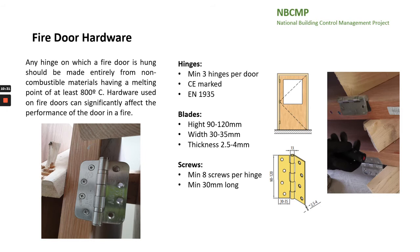Any hinge on which a fire door is hung should be made entirely from non-combustible materials, having a melting point of at least 800 degrees. Hardware used on fire doors can significantly affect the performance of the door in a fire. There must be at least 3 hinges per door. The hinges must be CE marked and EN 1935 compliant. The blades must be from 90 to 120 mm in height, 30 to 35 mm in width, and from 2.5 to 4 mm in thickness. There must be 8 screws 30 mm long per hinge.